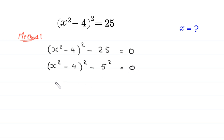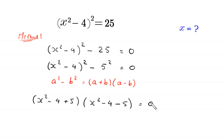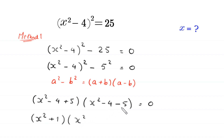Now by using the algebraic identity a² - b² = (a + b)(a - b), this expression becomes (x² - 4 + 5)(x² - 4 - 5) = 0. Here, -4 + 5 becomes +1 and -4 - 5 becomes -9, giving us (x² + 1)(x² - 9) = 0.